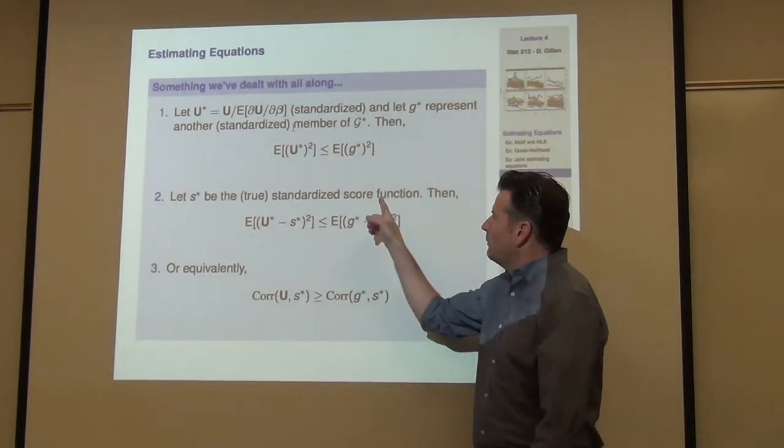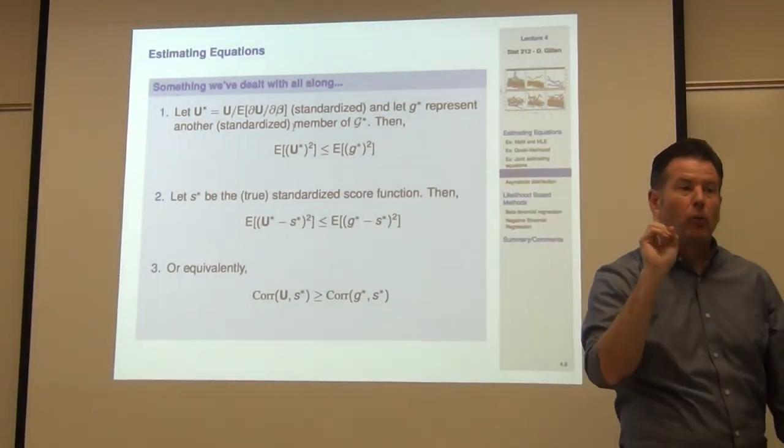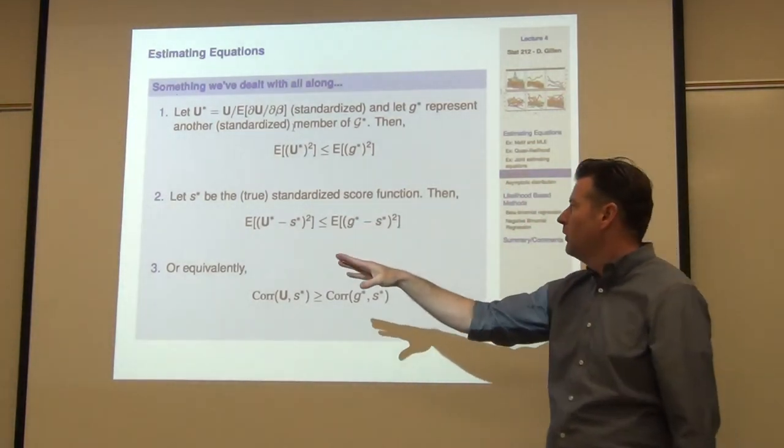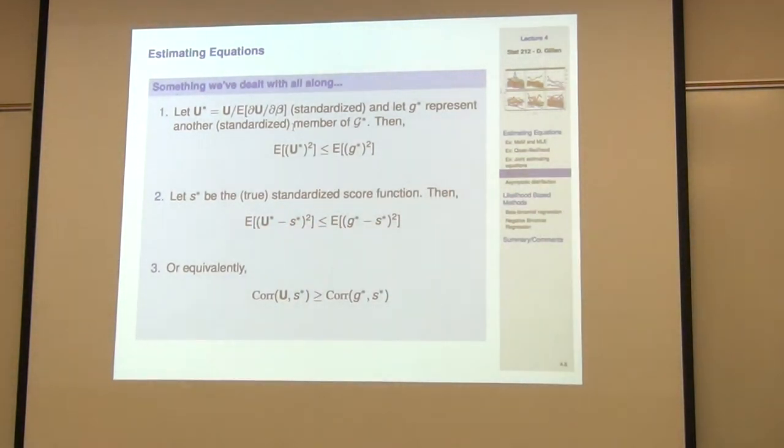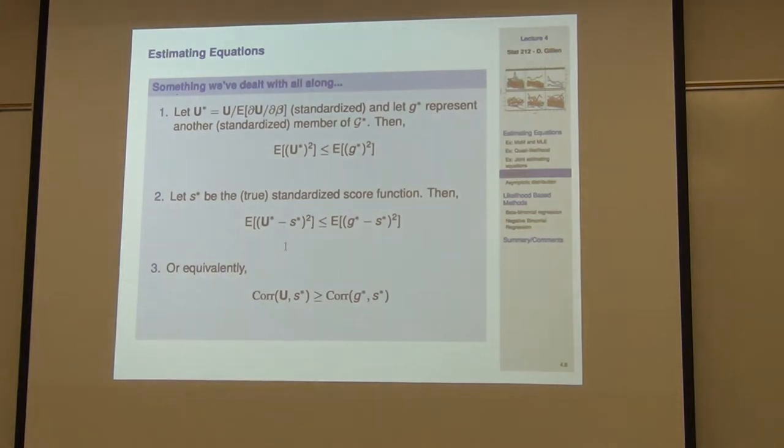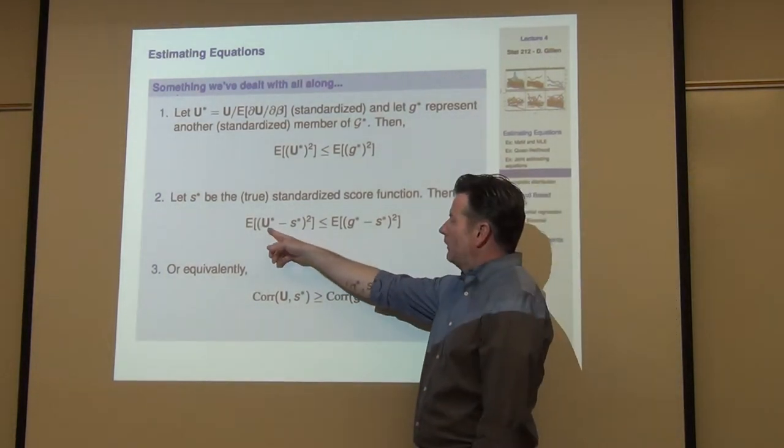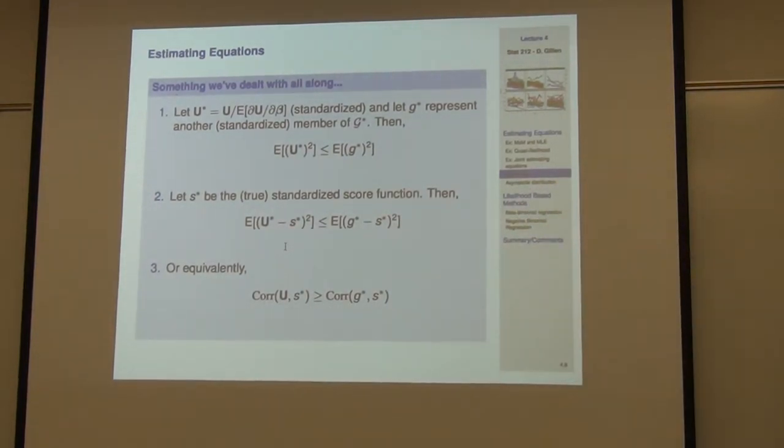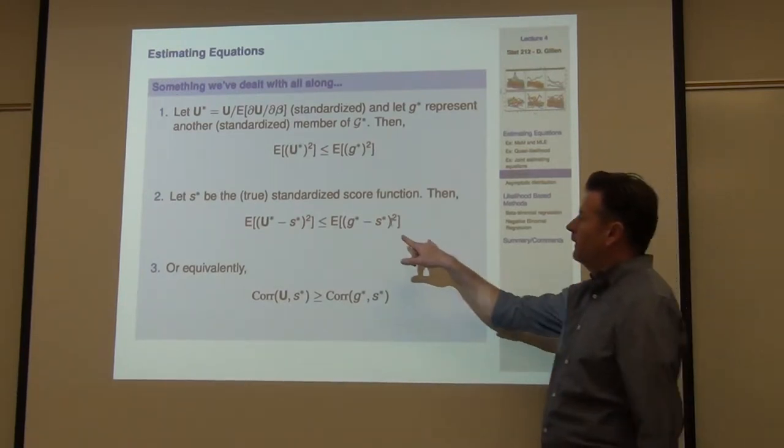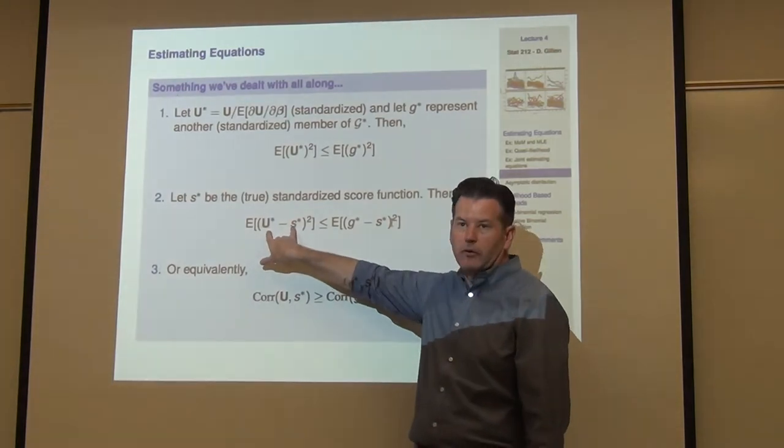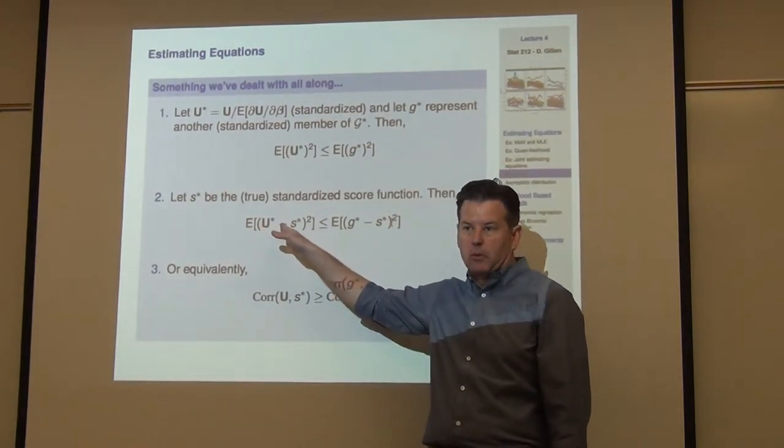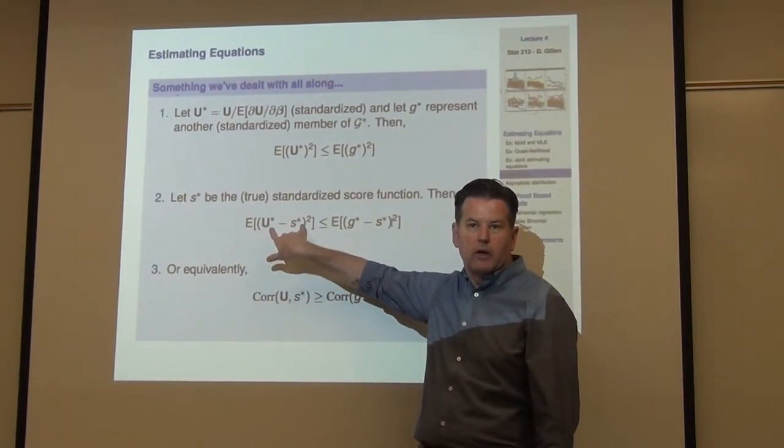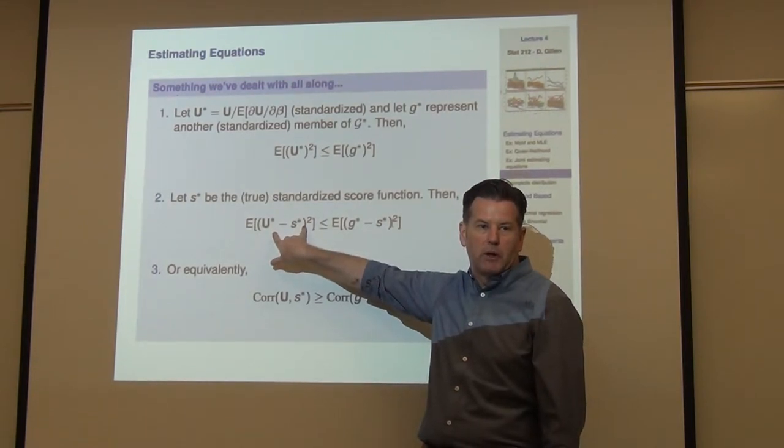Then they said, we also know something about the score function. We know that that's going to be optimal. And what I mean by the score, I mean the true score. If you knew the likelihood, you were able to take the derivative of that likelihood with respect to the unknown parameters and obtain S and then standardize it. What they showed there was that the expectation of U star minus S star quantity squared is less than or equal to the expectation of G star minus S star squared. What that means really is you can think about this as like the closeness of your estimating function relative to the optimal estimating function. And thinking about on average, you want to minimize this guy. You want to be as close as possible to the optimal estimating function.